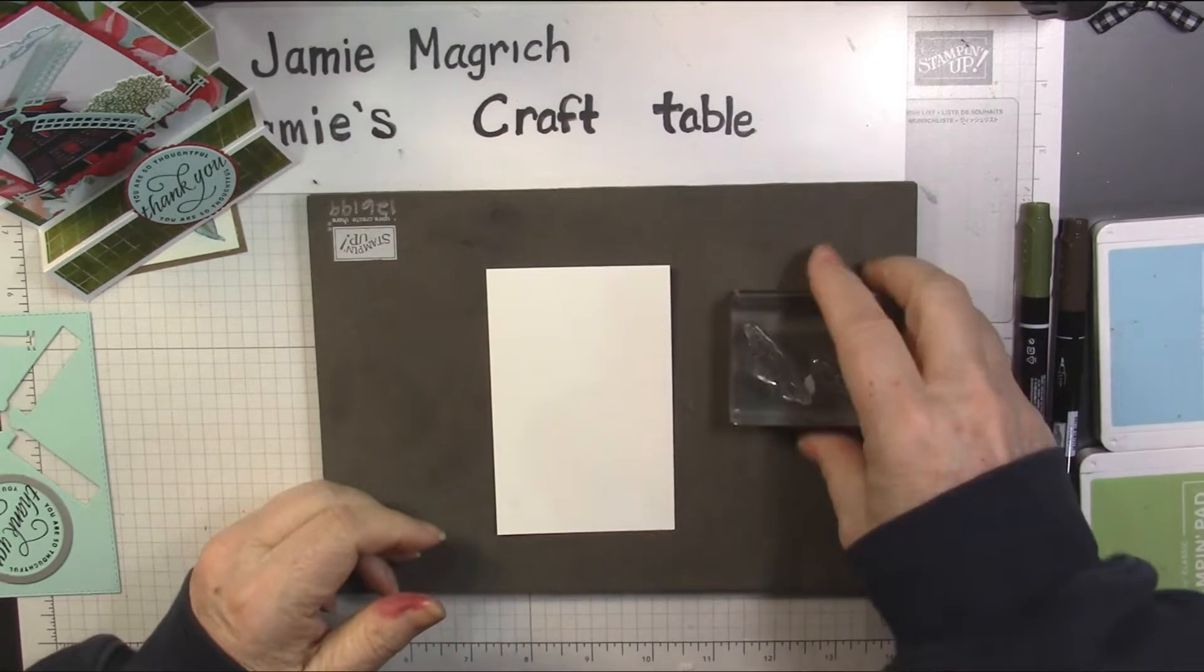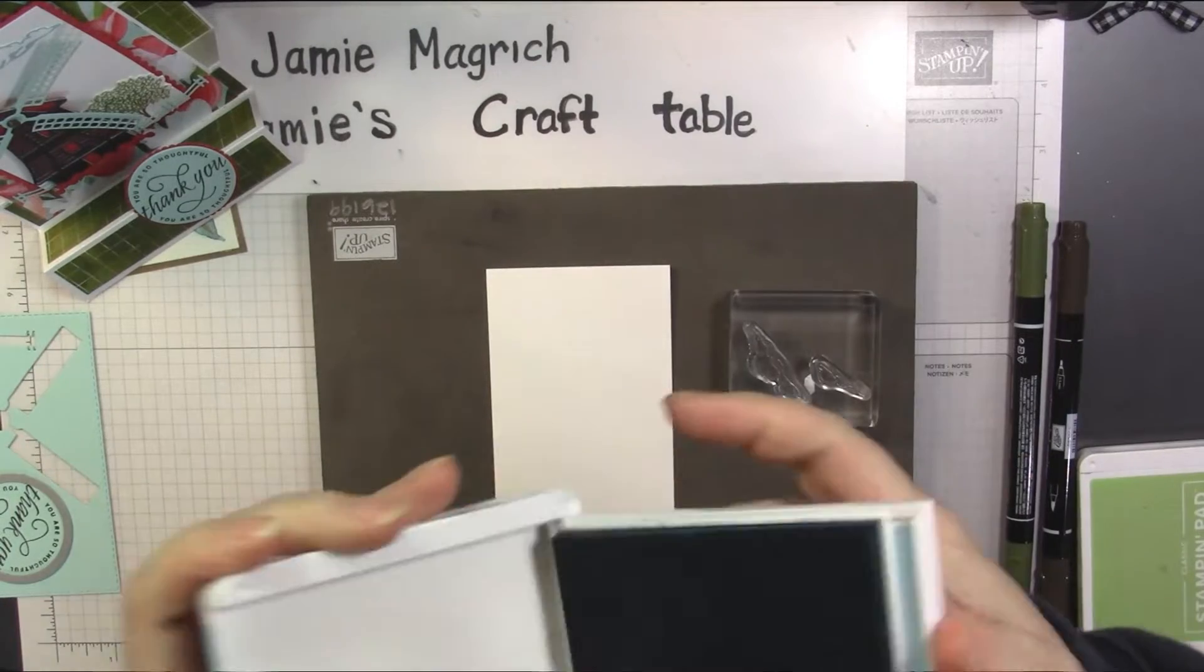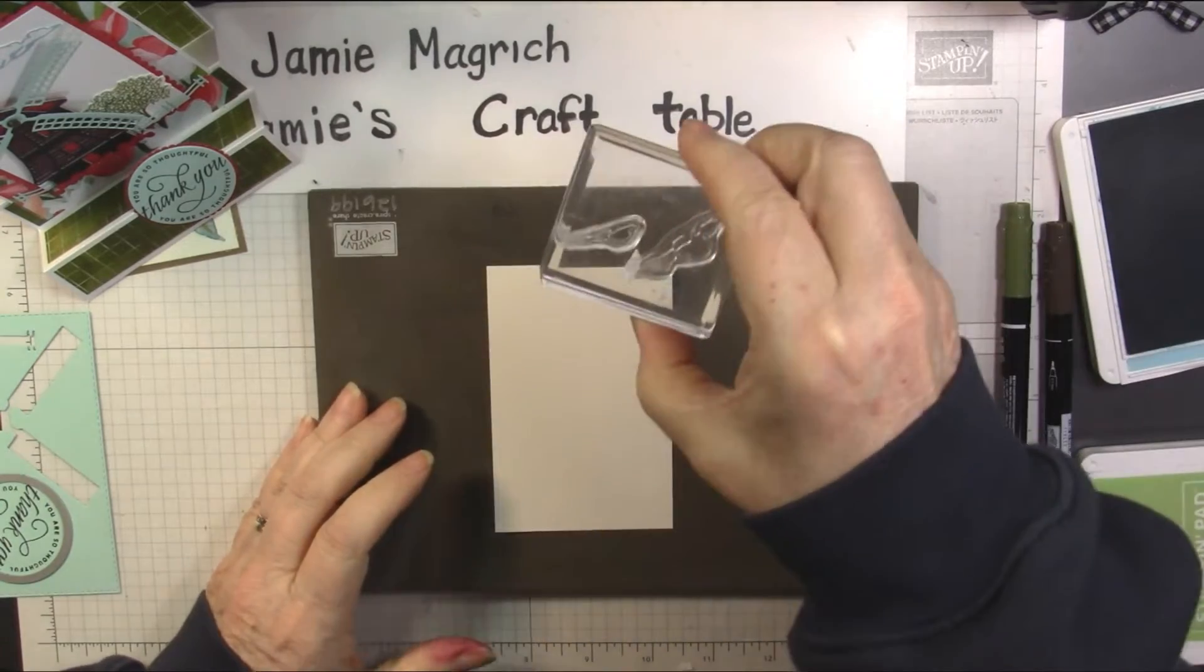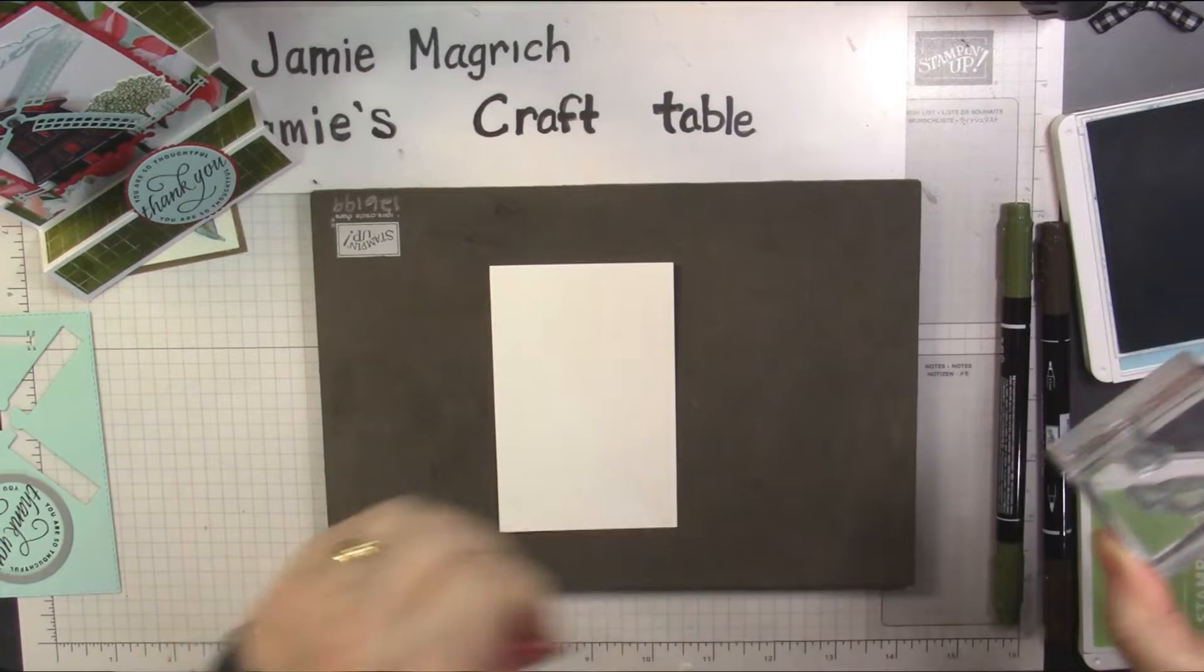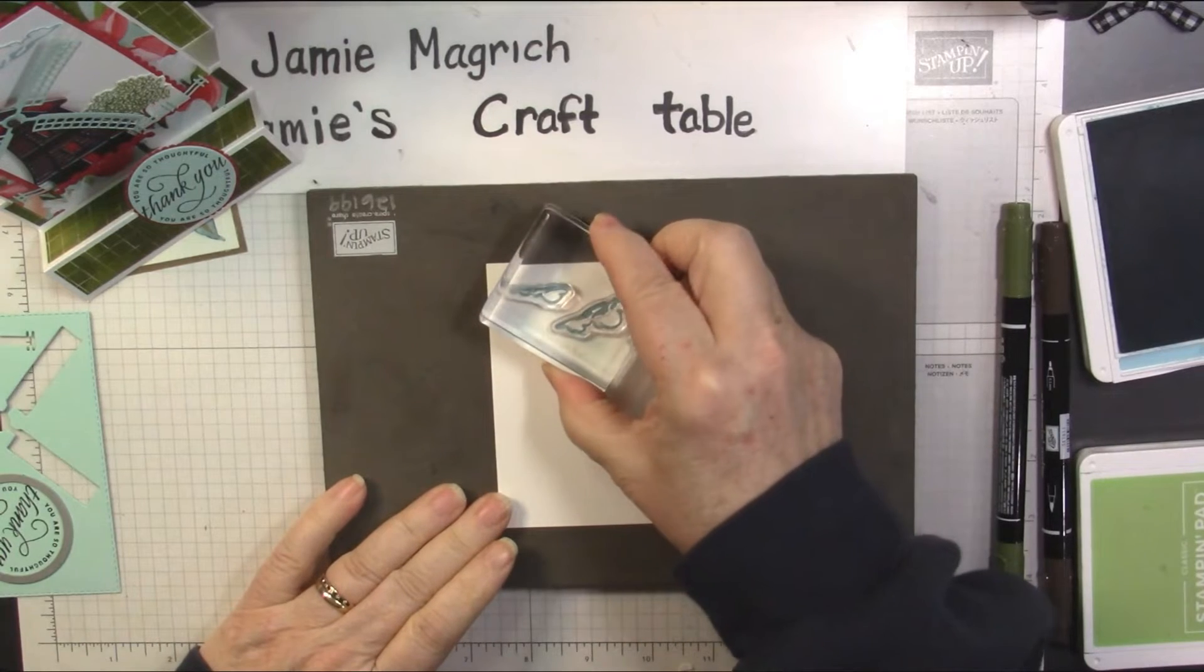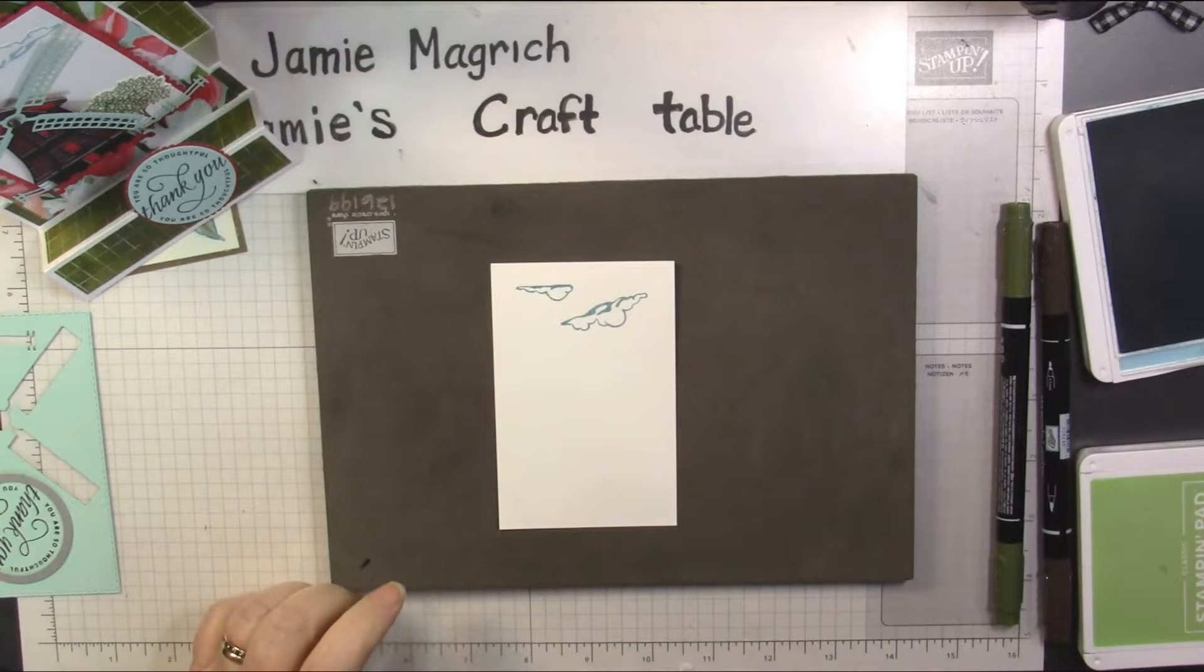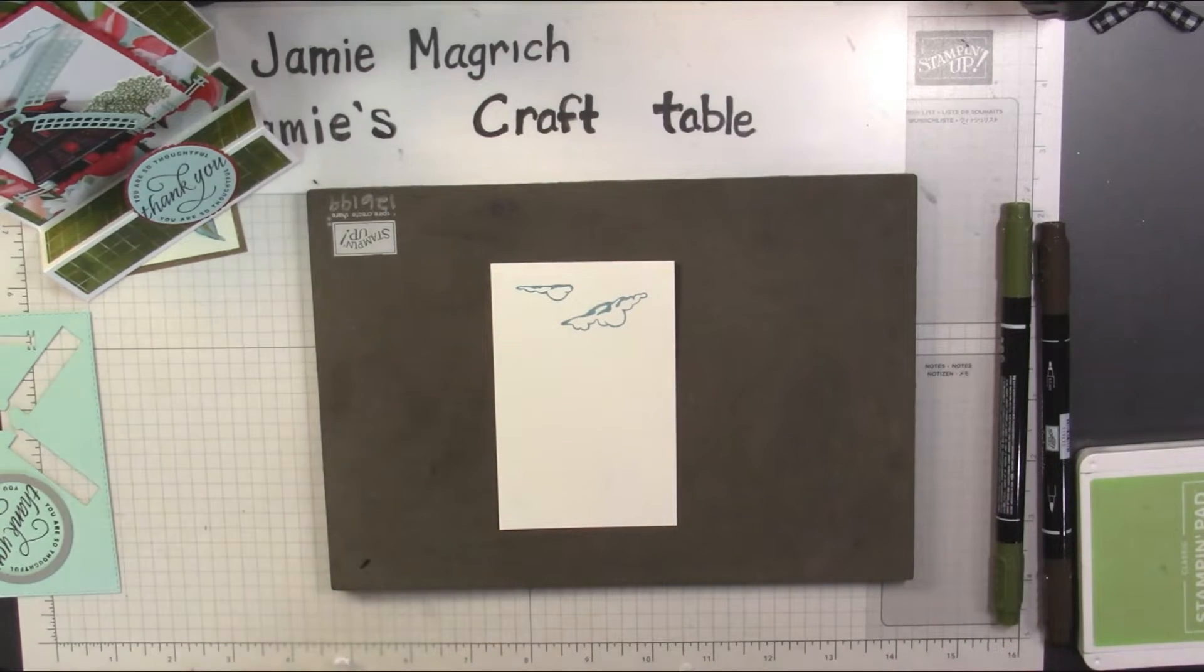Now the clouds are going to get stamped in the balmy blue. I've mounted them both on one block just to make it just a tiny bit easier. I'm done with the balmy blue ink, that can get put away.